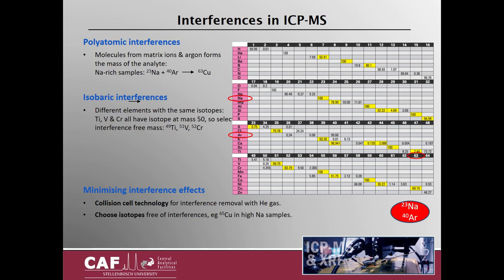Complex processes within the argon plasma can cause some ions from either the sample matrix or the gas environment to recombine and form large new molecules with the same mass as an analyte to be measured. These are called polyatomic interferences. When identifying interferences, you have to consider the isotope masses of all the ions and see how they add up to know on what element mass they will interfere. For example, in sodium-rich samples, sodium at mass 23 can combine with argon at mass 40 to form an interferent at mass 63, which is one of the isotopes of copper.